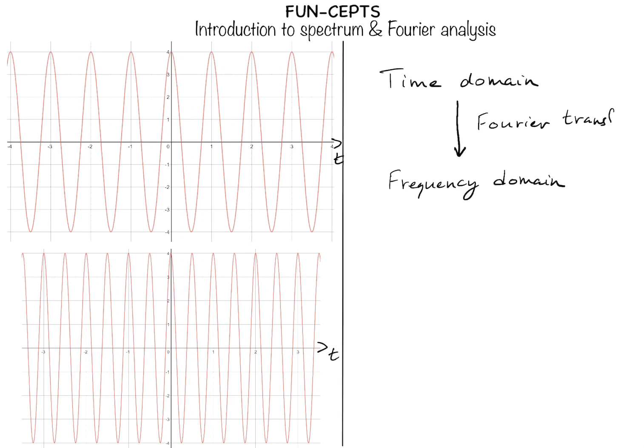There are variations of the Fourier transform which are referred to as the Fourier series, the discrete Fourier transform (DFT), the discrete time Fourier transform (DTFT), and so on, depending on the nature of the signal in the time domain. We'll leave these topics for another session, but they all simply represent Fourier transform variants — they mean the same thing; it's just that the signal in the time domain is of a different nature.